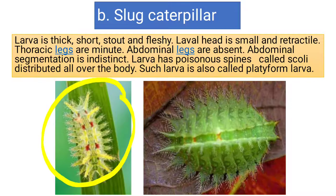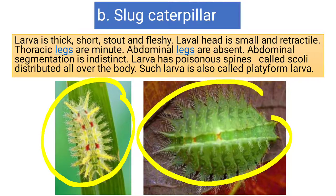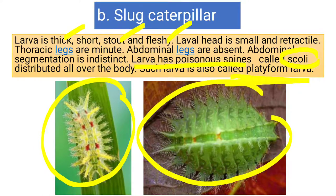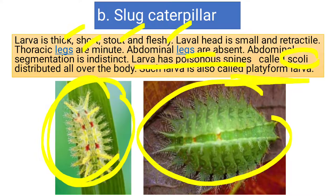Then we have slug caterpillars. A slug caterpillar is a very inactive type of larva, also called a platiform larva. These larvae have poisonous spines called scoli present all over the body. The body is short, stout, and fleshy. Thoracic legs are very short and minute. Abdominal legs are absent, but other features are shared with caterpillars.